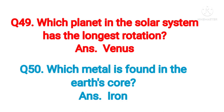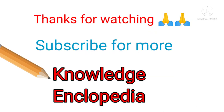Question number forty-nine: which planet in the solar system has the longest rotation? Answer: Venus. Question number fifty: which metal is found in the Earth's crust? Answer: Iron. Thanks for watching.